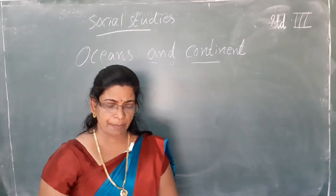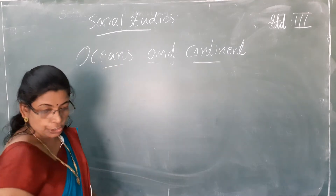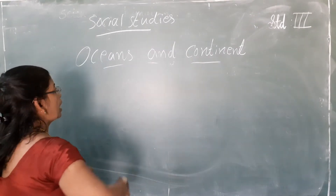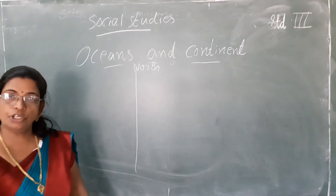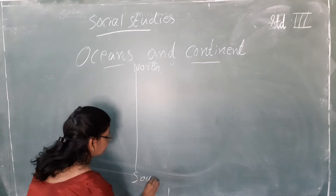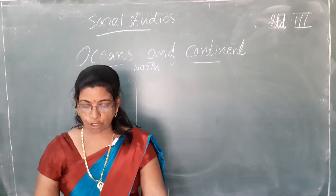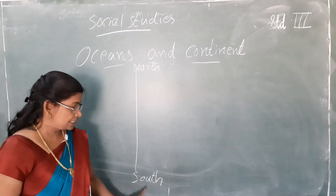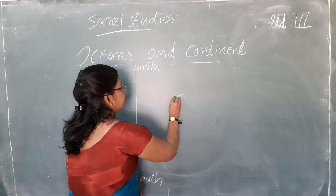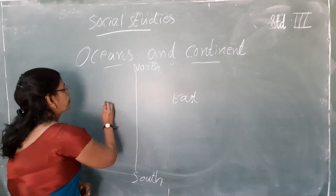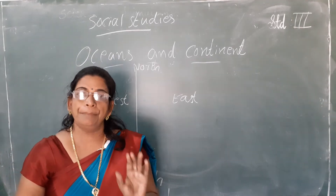As you stand facing a map — suppose a map is hung on the blackboard and you are facing the map — at the top it will be North, and so automatically the bottom will be South. Stand facing a map: the top part is North, the bottom is South, your right is East, and your left is West. You should know these four directions in order to find a place on the map.